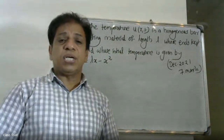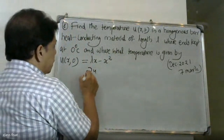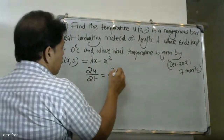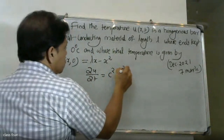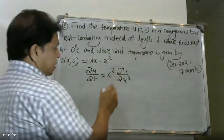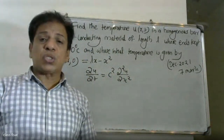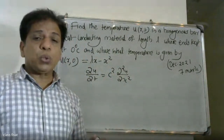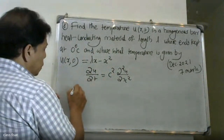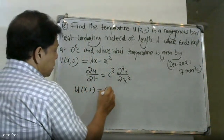The heat equation is: ∂u/∂t is equal to c² into ∂²u/∂x². In our equation, ∂u/∂t is equal to c² into ∂²u/∂x² squared. The most suitable solution is u(x,t).